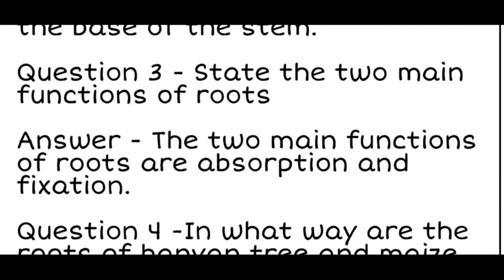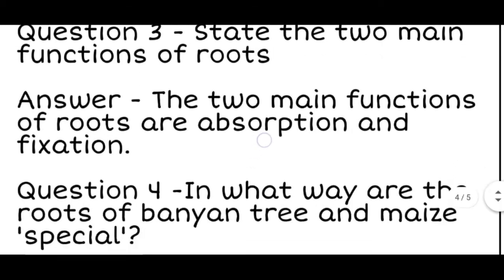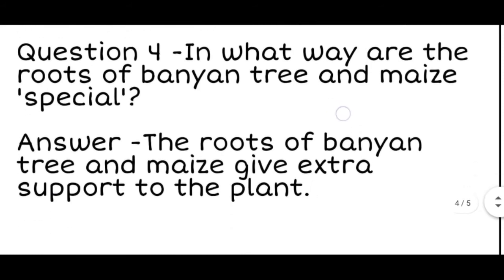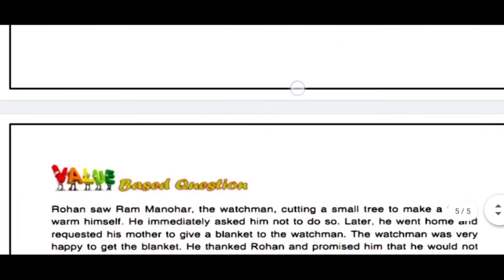Question three is: State the two main functions of root. Answer is: The two main functions of the roots are absorption and fixation. Question four: In what way are the roots of bunion tree and maize special? The answer is: The roots of bunion tree and maize give extra support to the plant.